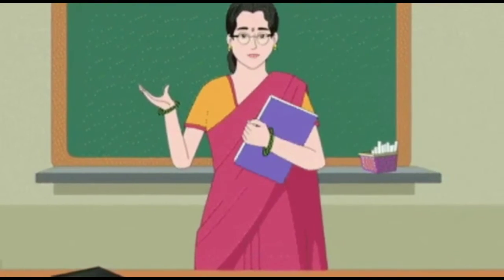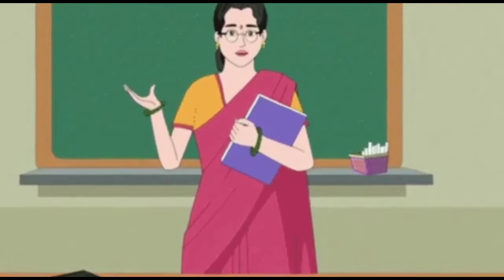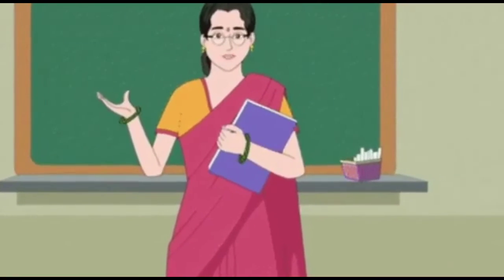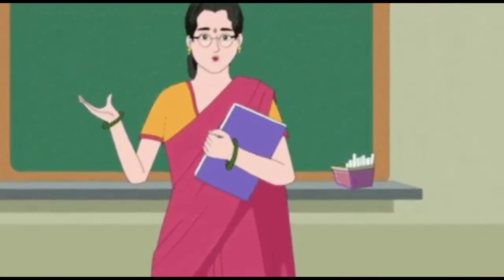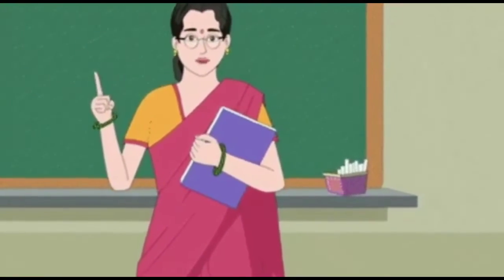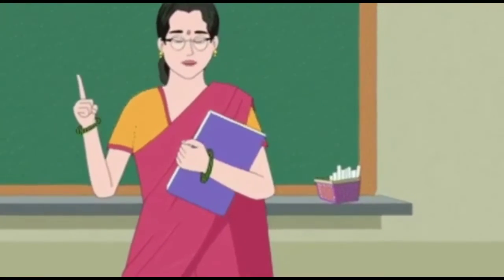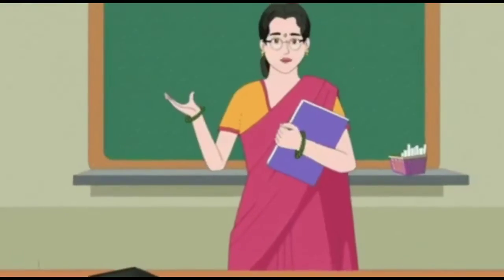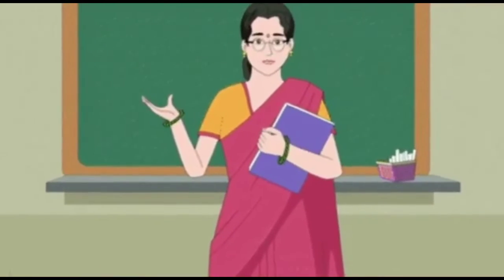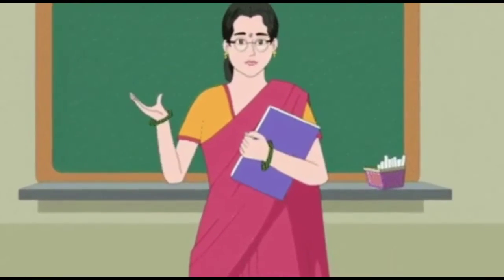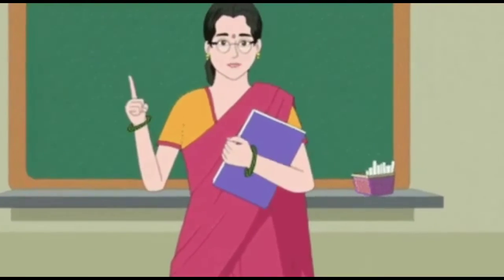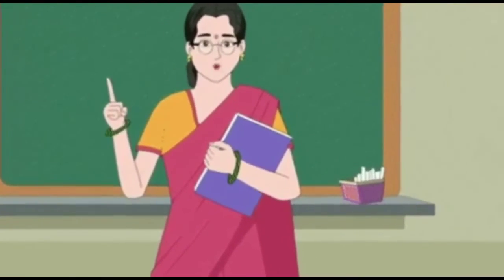What is a season? When one type of weather continues for many days, we call it a season. There are five different seasons in a year: summer, monsoon, winter, autumn, and spring.